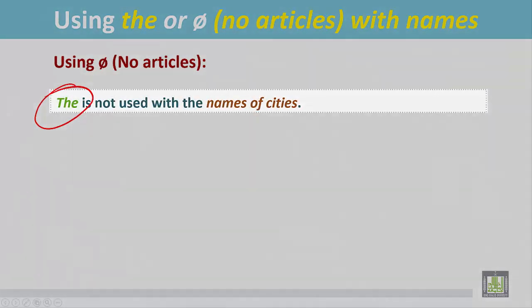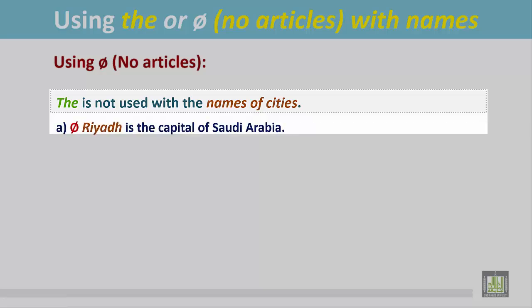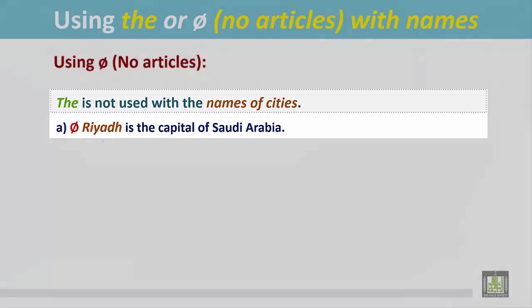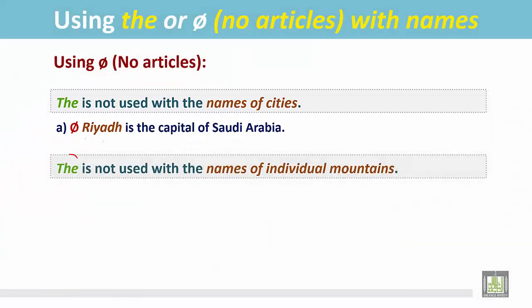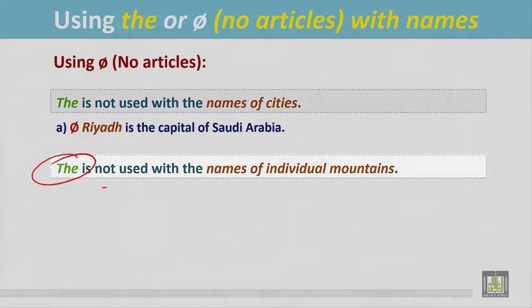'The' is not used with the names of cities — cities like Abha, Riyadh, Jeddah, New York, and London. For example: 'Riyadh is the capital of Saudi Arabia,' and there is no article before Riyadh because it is the name of a city.